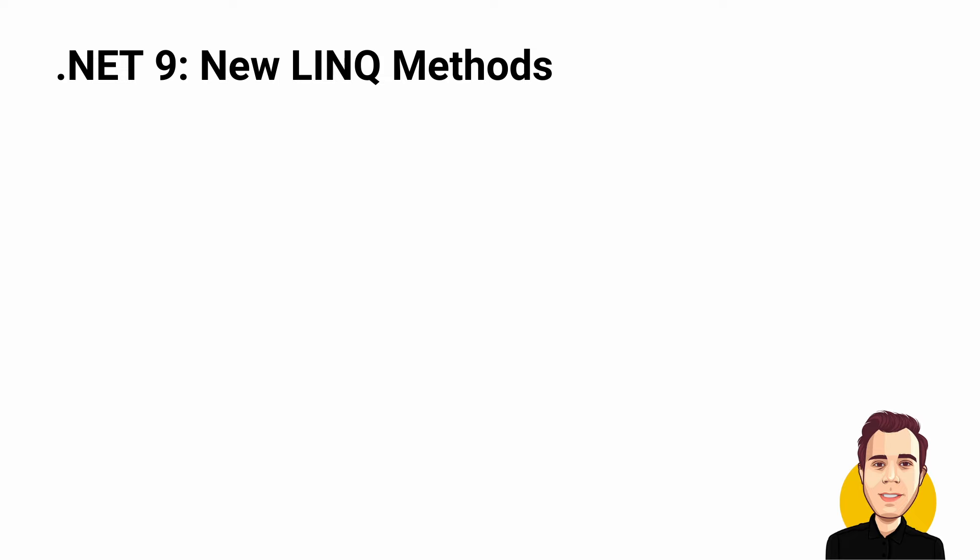Enough talking about .NET 9 Preview 1 in general — let's look at the first new features we got. We get 3 new LINQ methods: countBy, aggregateBy, and index.